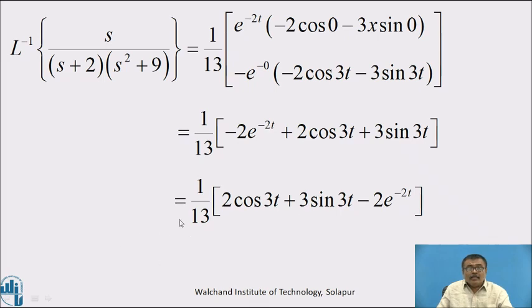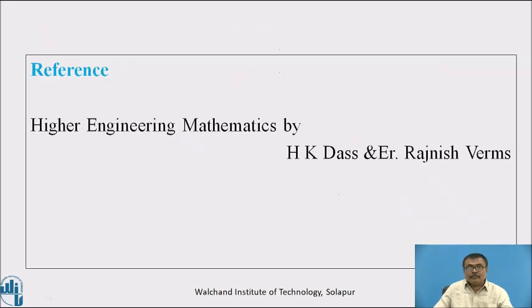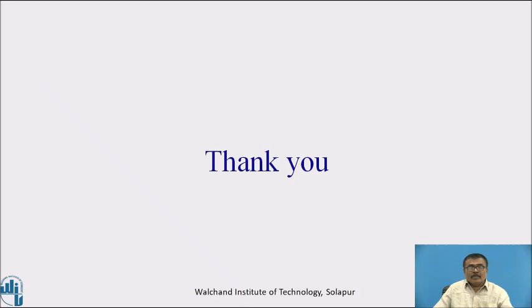Therefore, L⁻¹{s/((s+2)(s²+9))} = (1/13)·(2·cos 3t + 3·sin 3t − 2e^(−2t)). Thank you.